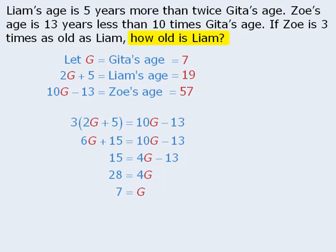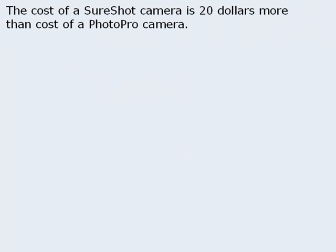The question asks us to find Liam's age, so the answer is 19. Notice that the crucial step was taking the information about Zoe being 3 times as old as Liam and then writing the equation accordingly. Given the importance of this step, let's look at another example where we can create an appropriate equation.